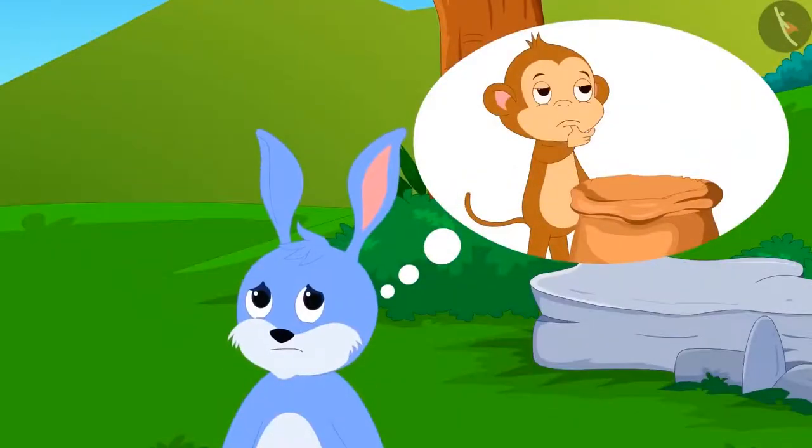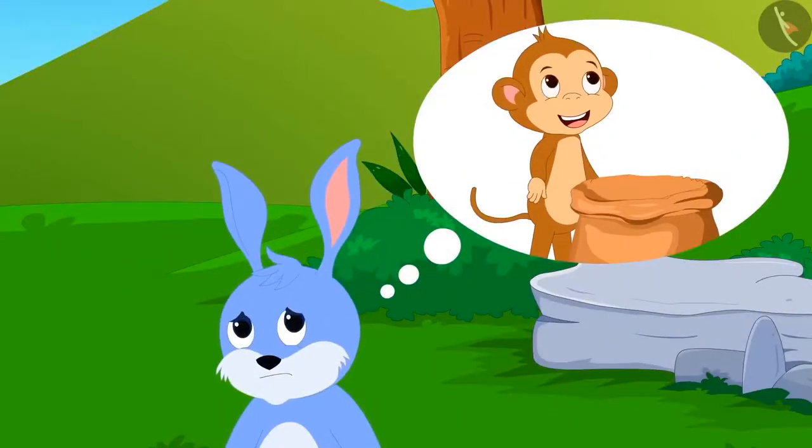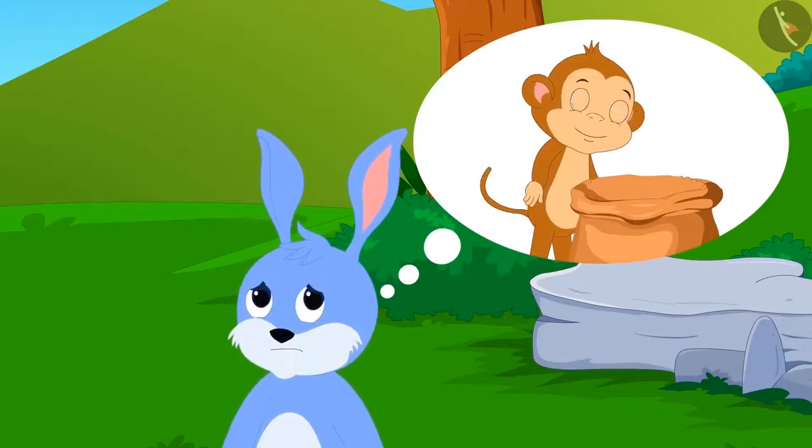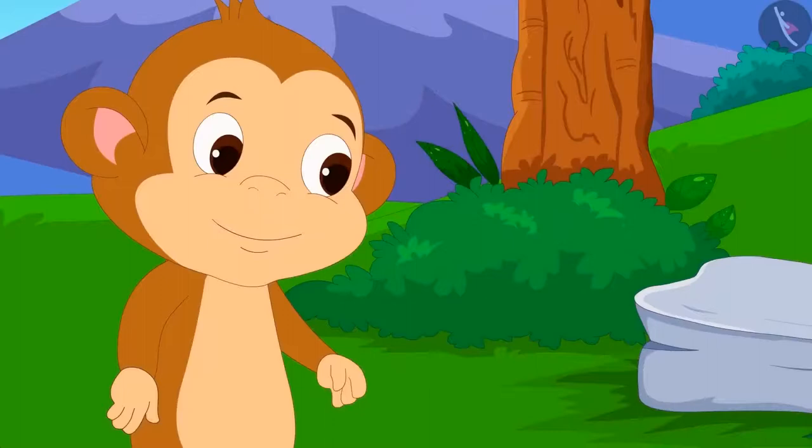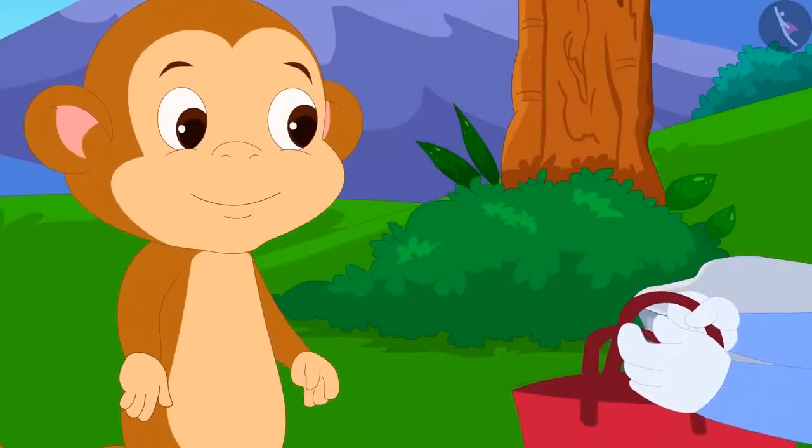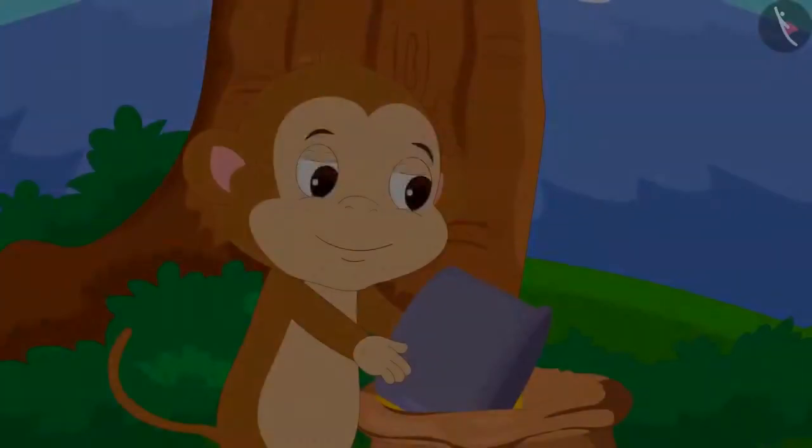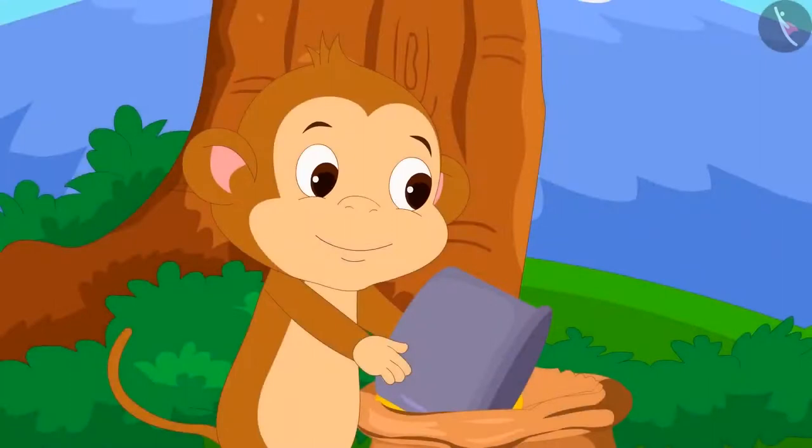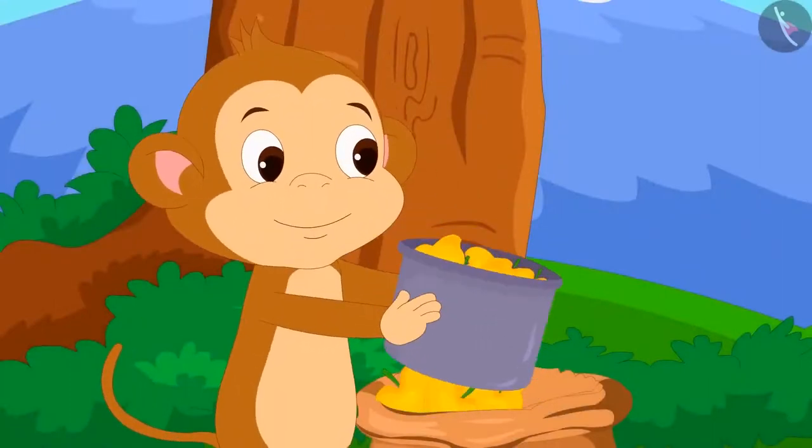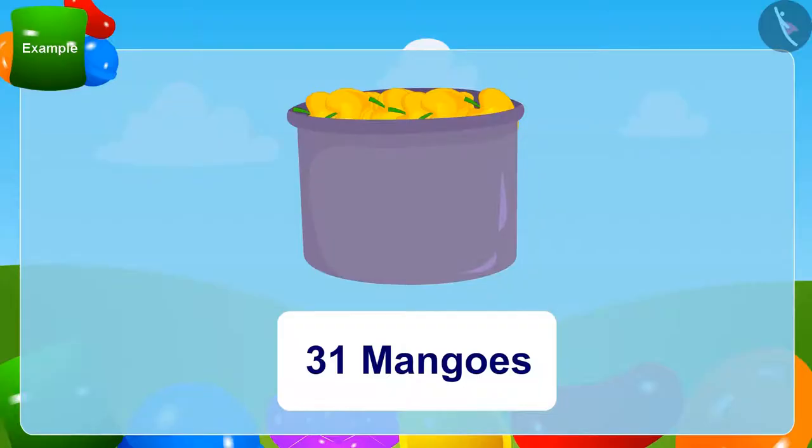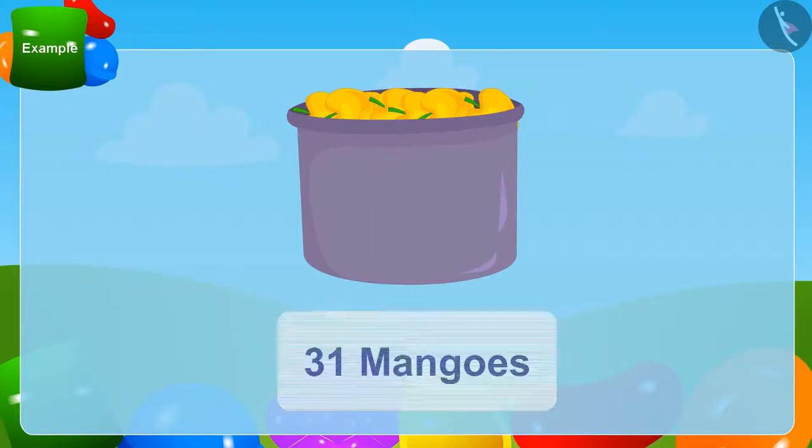Bunny thought that if he takes mangoes in the end, there may not be any mangoes left for him. And so, he was the first to put his bag forward. Babban dipped the box in his big bag and took it out filled with mangoes. There were a total of 31 mangoes in the box. He put these mangoes in Bunny's bag.